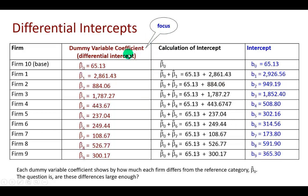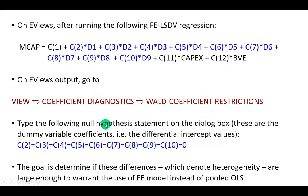But our focus, as I indicate here, is on the differential intercepts, because each dummy variable coefficient shows us by how much each firm differs from the reference category, which is beta sub 0. But the question is, are these differences large enough?